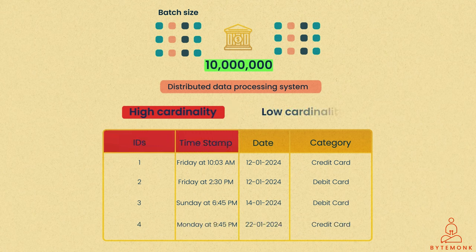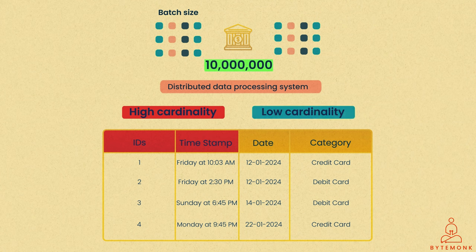So, always aim for low cardinality columns like date, category, or method instead, as they have fewer unique values and will lead to larger, more efficient batches that get your work done quicker.